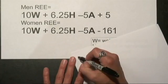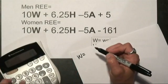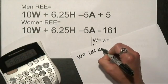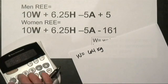For instance, my weight is about 140 pounds. So I know 140 divided by 2.2 will give me about 64 kilograms. I also know I'm 5 foot 4, so that's about 64 inches.